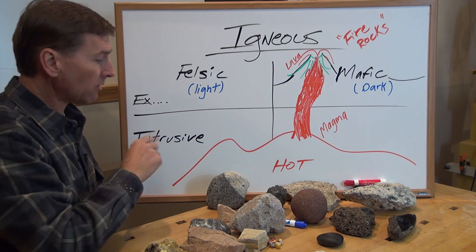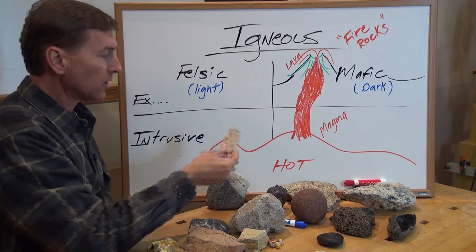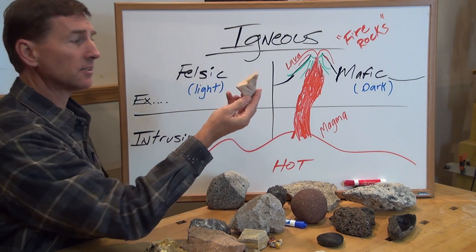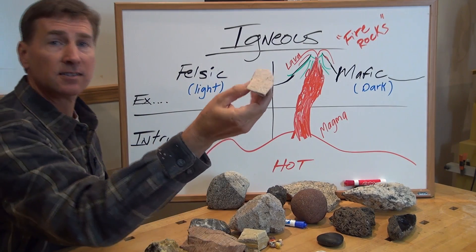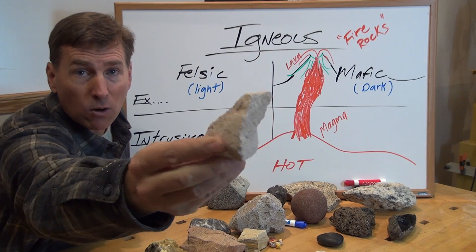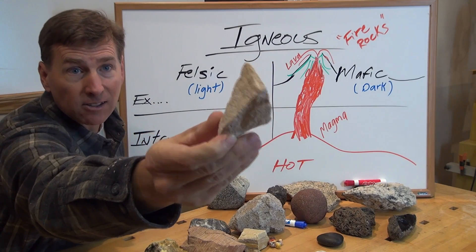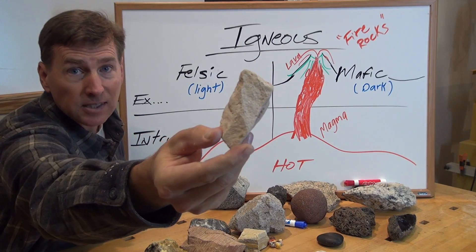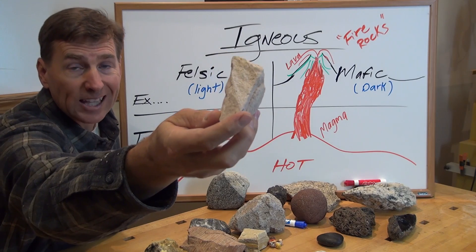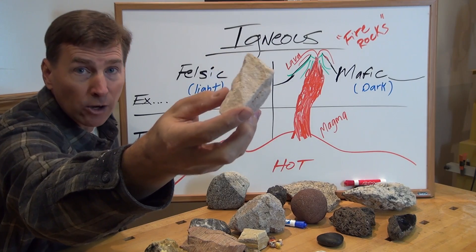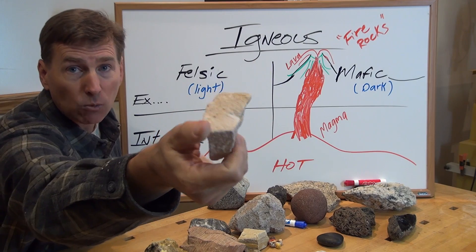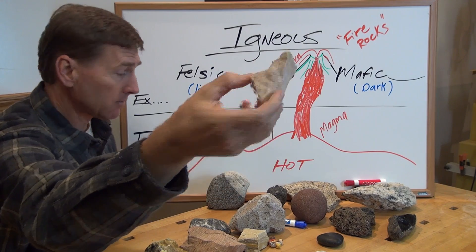On the light-colored side we have our first rock called rhyolite — R-H-Y-O-L-I-T-E. You see this in the Sierra Nevadas quite a bit, like near Squaw Valley. I've seen a bunch of these light-colored lavas. That's rhyolite.